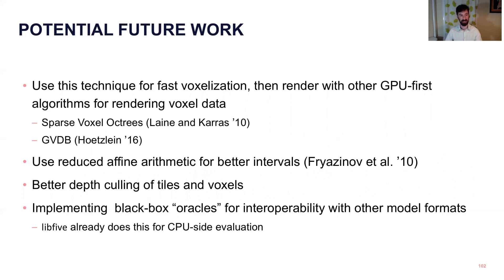There's a lot of interesting directions that you could take this. One strategy would be to use this technique to do a voxelization, and then use another algorithm to do a high-resolution rendering of that voxelization. And so that would let you do a relatively fast, coarse voxelization, but then get big high resolution images. There's a lot of work that you can do to optimize the interval arithmetic. Reduced affine arithmetic is one branch of that. We could also optimize the depth culling. And finally, in my desktop software that runs on the CPU side, we implement what we call oracles, which are kind of arbitrary black box functions. And this lets you plug in meshes or voxel data or other representations that aren't pure implicit math expressions. So bringing this API over to the GPU would kind of open up the space of what models you could represent and work with.